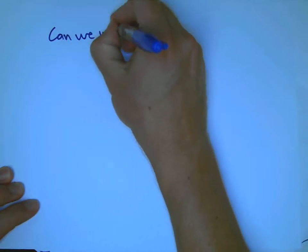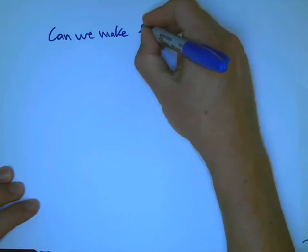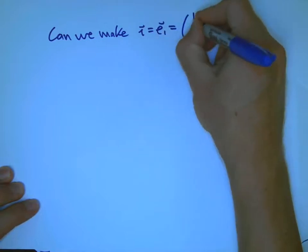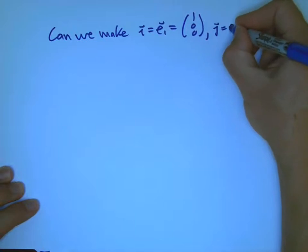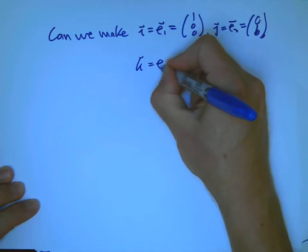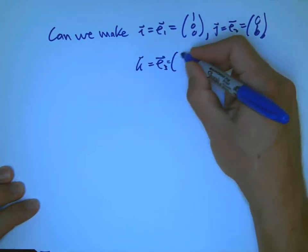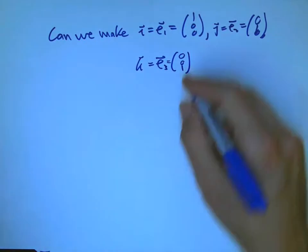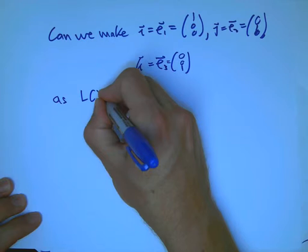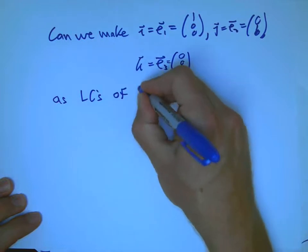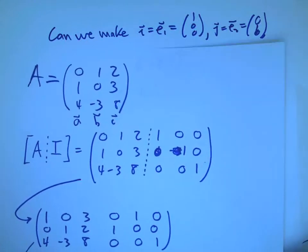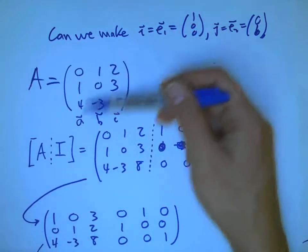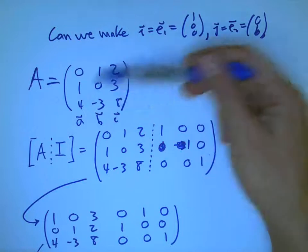And then the question was, so it seems like a different question. The question was, can we make I, or E1, or in other words, 1, 0, 0, and also J, or E2, or 0, 1, 0, and K, or the more systematic way is E3, equals 0, 0, 1, as linear combinations of those funky vectors, A, B, and C.